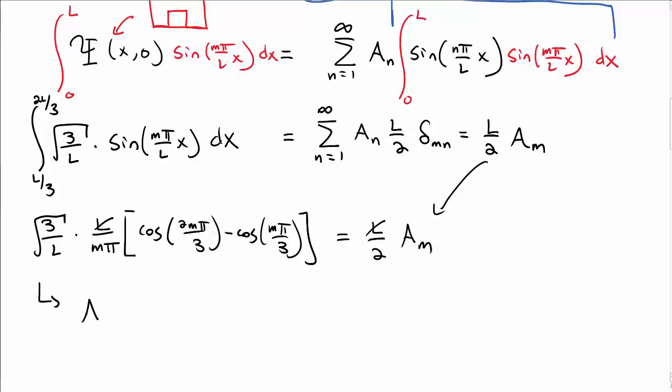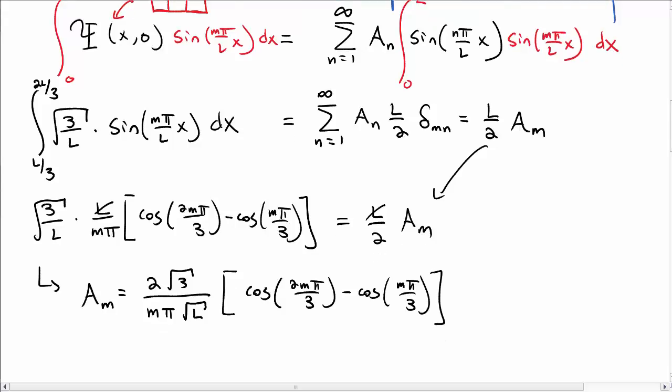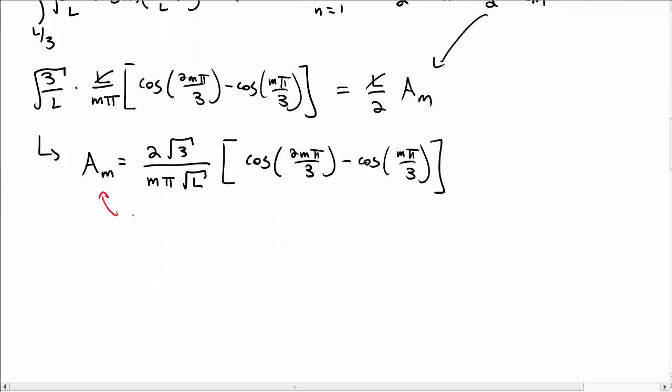So now I can solve for a sub m, the coefficients that I was looking for. And it's 2 square root of 3 over m pi square root of L, cosine of 2m pi over 3, minus cosine of m pi over 3. It looks kind of nasty, but we actually have found now the a sub m, the coefficients for the general solution.